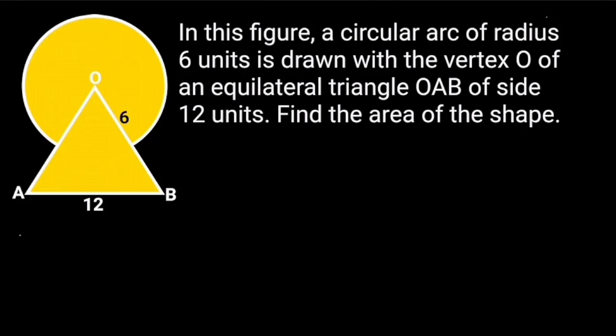To solve this problem, first let's find the area of triangle OAB. Since triangle OAB is an equilateral triangle, it follows that each side of the triangle is 12 units. So, we are going to use Heron's formula to find the area.